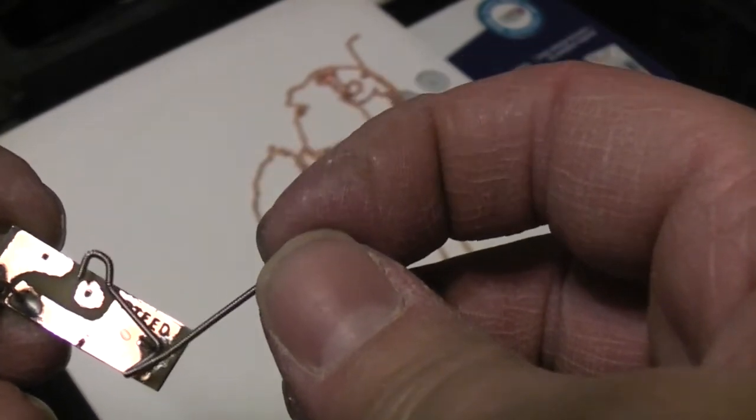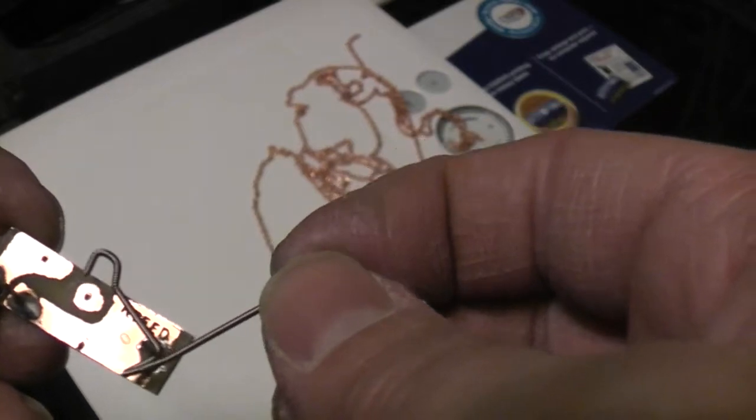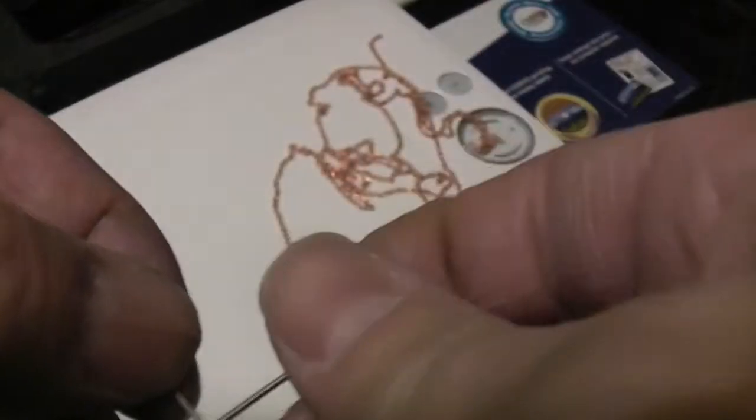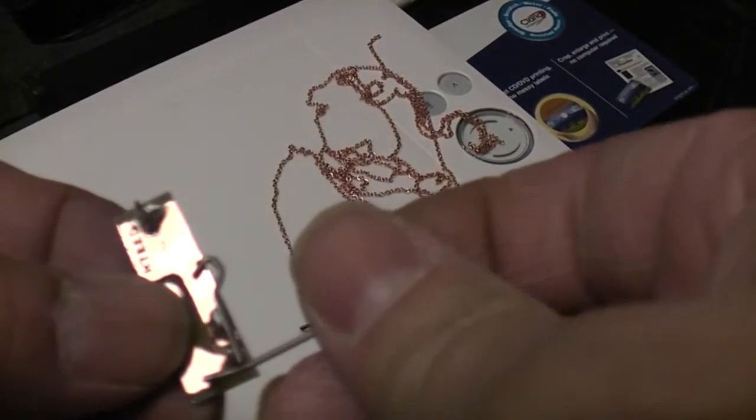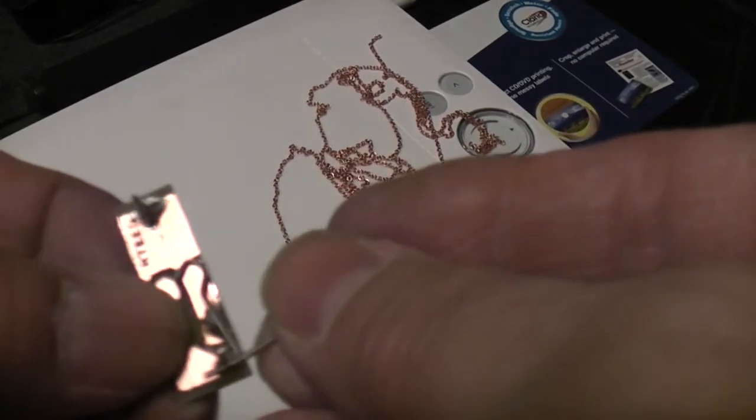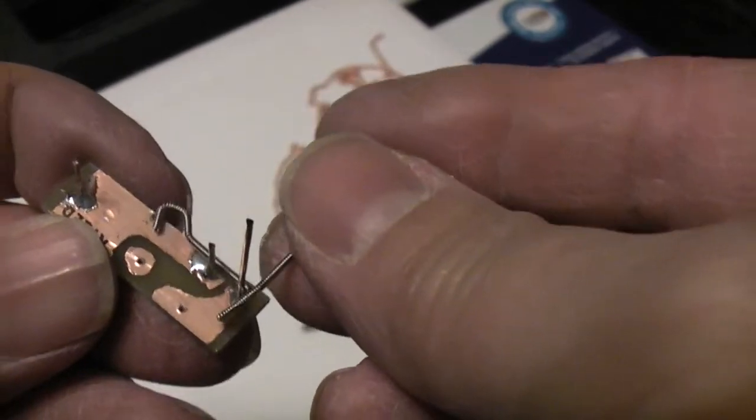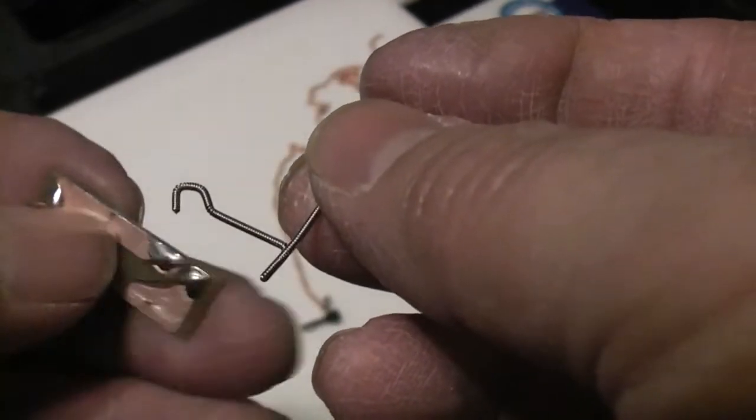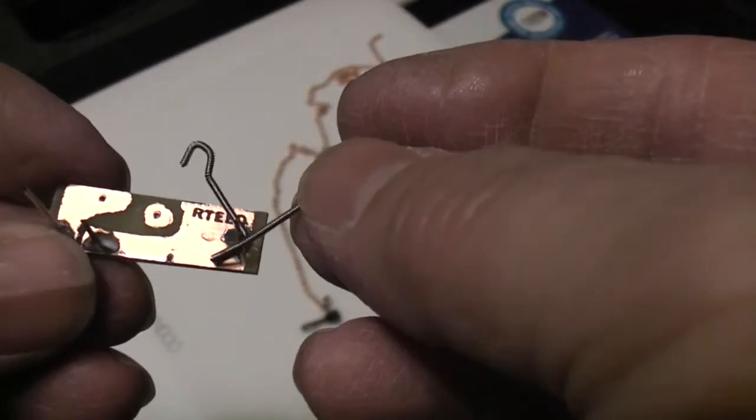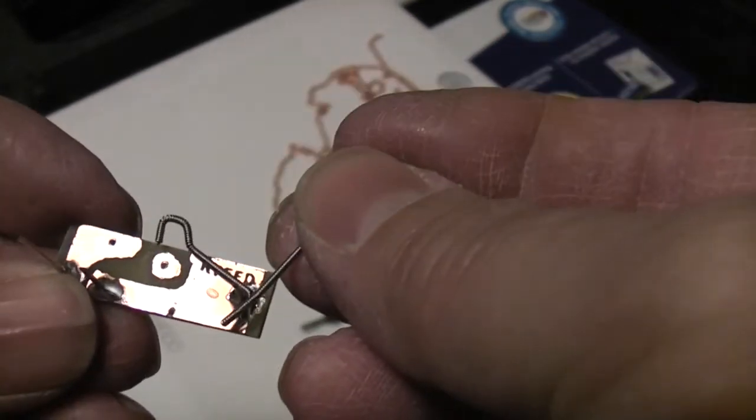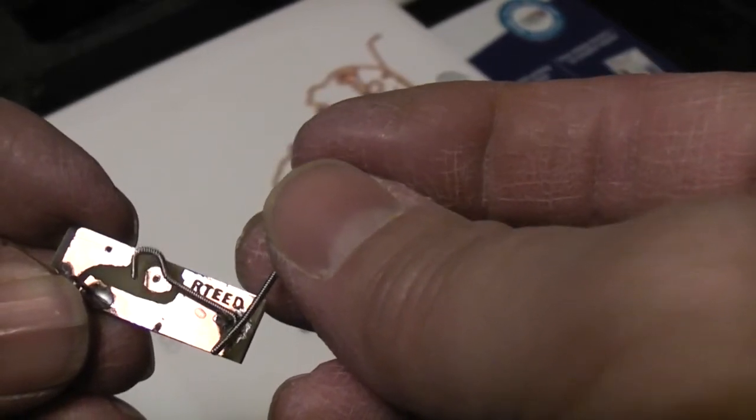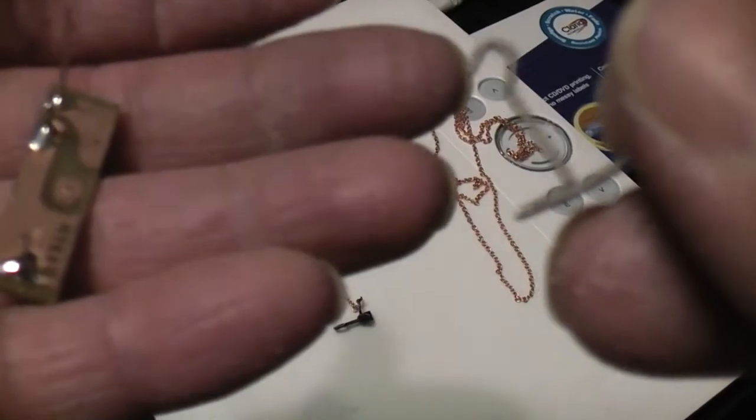Now this is going to need adjusted because right now I can tell you it's going to be hitting right there. So we'll adjust it like that. I've got some needle nose pliers I'm working with. We might have to refine this a little bit, but that's how it's going to work. As the wire's heated up, it'll pull this, which will pull the coupler. I think we'll set it up like that. Next step will be the spring.